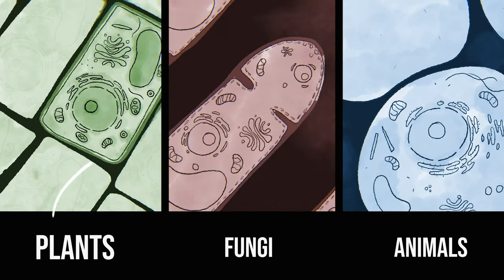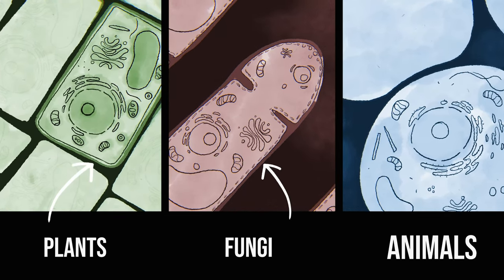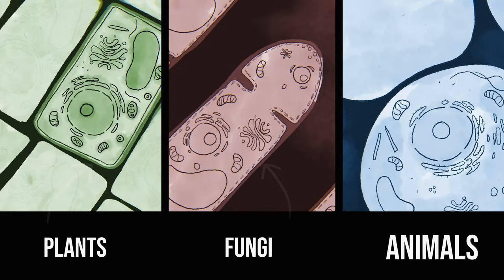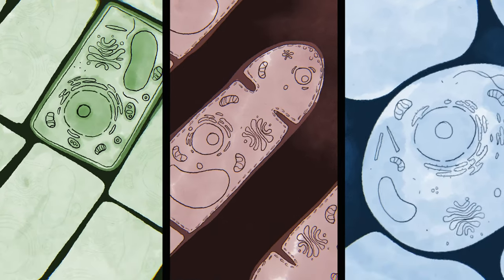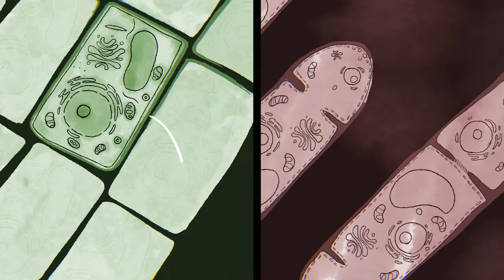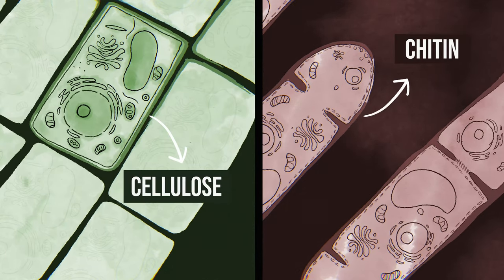You can see that both plants and fungi have cell walls, whereas animals do not. But within plants, the cell walls are made up of cellulose, while in fungi they are made up of chitin. But there's one more feature of the fungal kingdom that we haven't discussed yet. Let's head over to the laboratory to get a closer look.